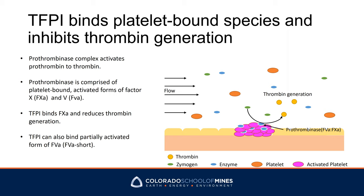The final product, thrombin, is activated from prothrombin by a complex called prothrombinase, and this prothrombinase is a complex made of coagulation factor 10a and factor 5a. Serine protease inhibitor TFPI can inhibit factor 10a to reduce thrombin generation and lower the strength of the clot.